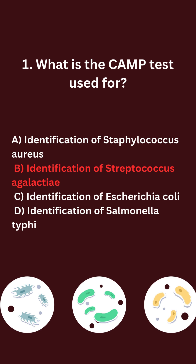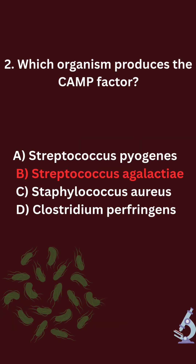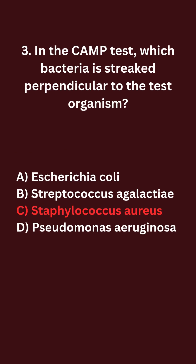Which organism produces the CAMP factor? A. Streptococcus pyogenes. B. Streptococcus agalactiae. C. Staphylococcus aureus. D. Clostridium perfringens.